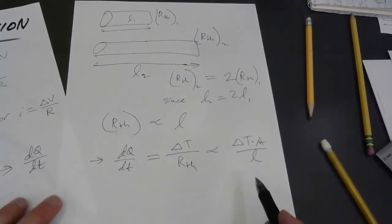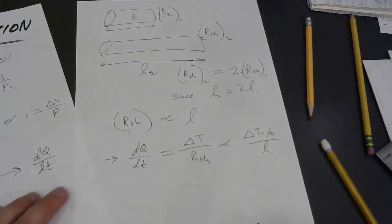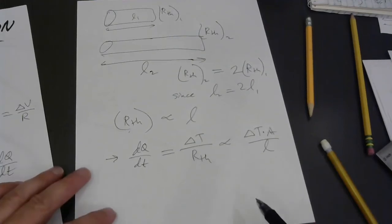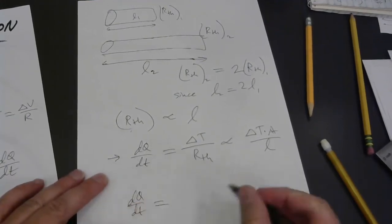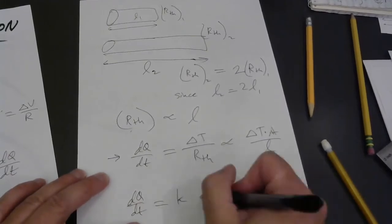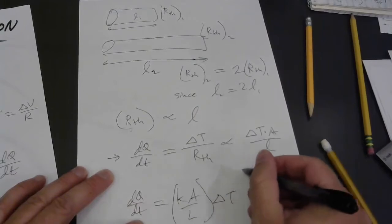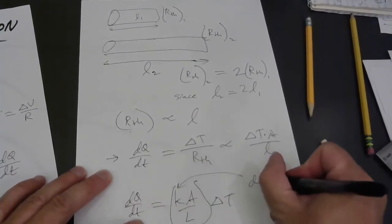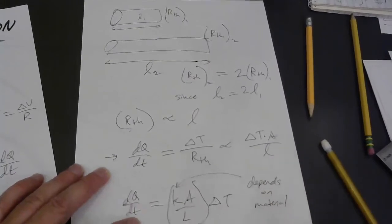And then lastly, we'd have to account for the conductivity of the material itself. Like I said, glass would have a lower rate of heat transfer than just about any metal. So the last thing we stick in here is just that constant of proportionality. So I'll say that this depends on the material and I believe that's called the thermal conductivity.